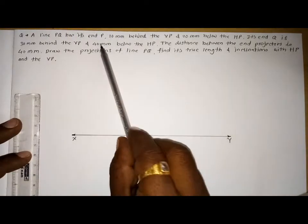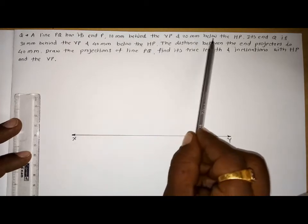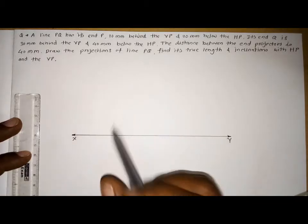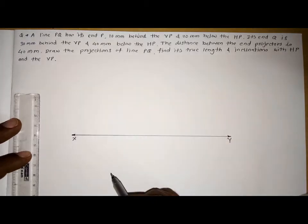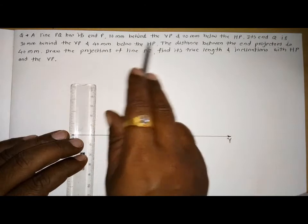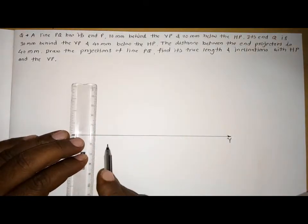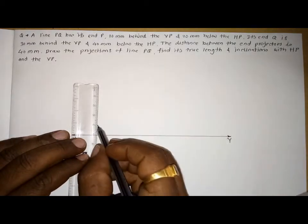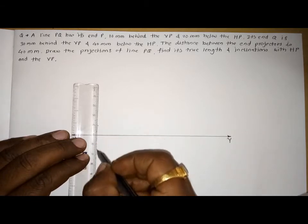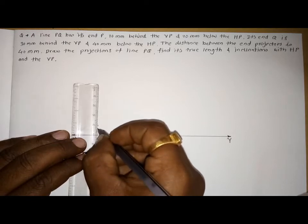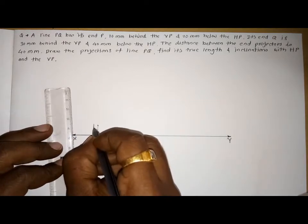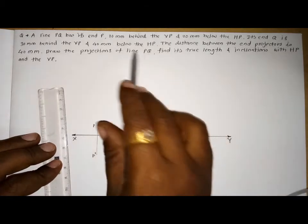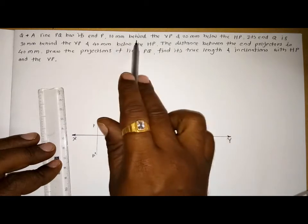Point P is 10 mm behind the VP and 20 mm below the HP, which means P is in the third quadrant. When a point is in the third quadrant, its front view will be below the XY line and the top view will be above the XY line. That's why I plot the 10 mm distance above the XY line for the top view, and 20 mm below for the front view. This point is P and this is the front view of P.